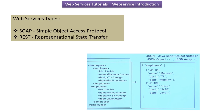SOAP is a protocol that defines a set of rules for sending structured information over the internet. SOAP uses XML to format the data. Here you can see the information about employees like ID, name, designation and department written in XML format. A message in SOAP looks like a letter written with specific rules to ensure everyone understands it.